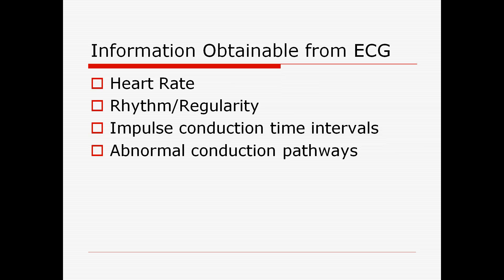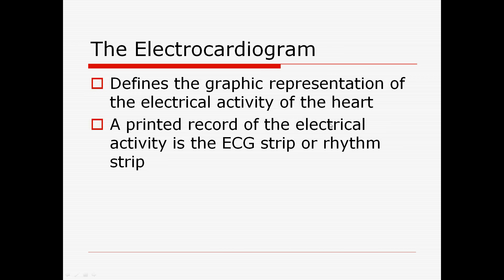What can we learn from looking at an EKG strip? It tells us the heart rate, whether the rhythm is regular or irregular, and the time intervals — for example, how long it takes the impulse to travel from the SA node to the AV node, and how long the ventricle takes to contract. It also reveals abnormal conduction pathways, helping us identify where a dysrhythmia is originating. The electrocardiogram is simply a graphic representation of the electrical activity of the heart.